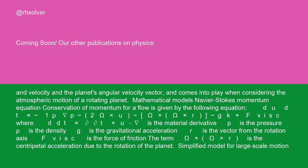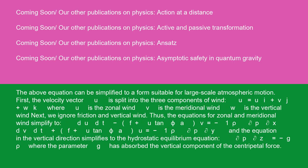Simplified model for large-scale motion: The above equation can be simplified to a form suitable for large-scale atmospheric motion. First, the velocity vector u is split into the three components of wind: u = ui + vj + wk, where u is the zonal wind, v is the meridional wind, and w is the vertical wind. Next, we ignore friction and vertical wind.